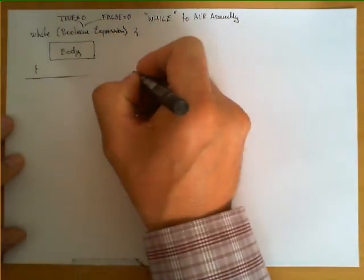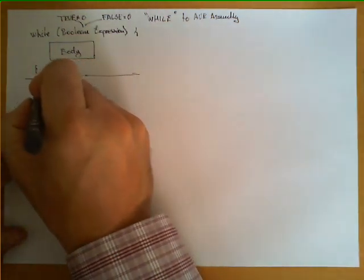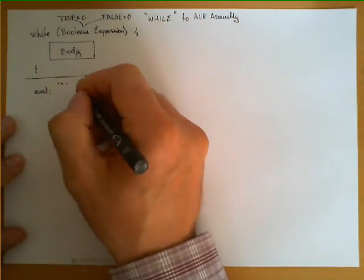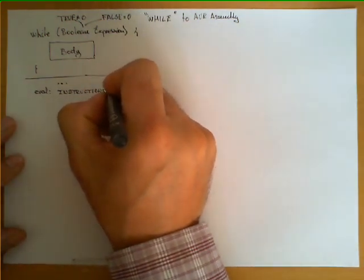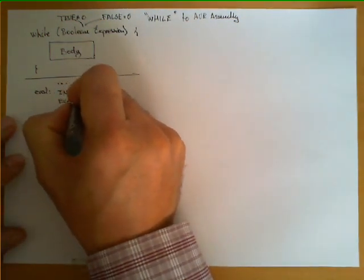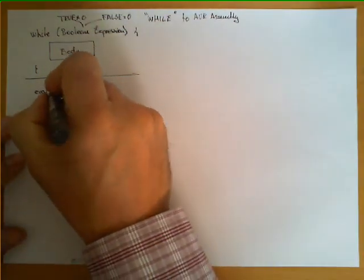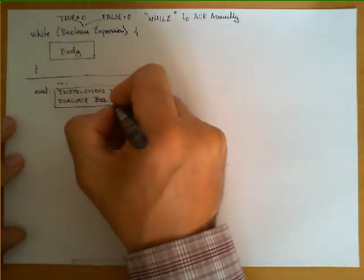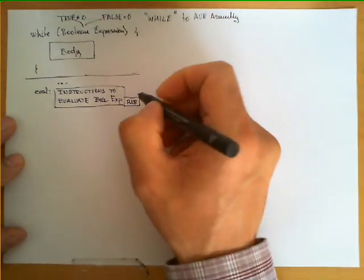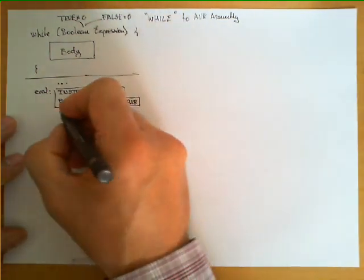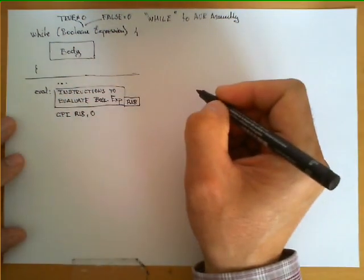In assembly code, this translates generically as follows. First, we assume we have some previous instructions. We define a first label which we call eval, and this eval points to the set of instructions — which could be arbitrarily complex — to evaluate the boolean expression. For the sake of this example, let's assume that the result of evaluating that expression has been stored in R18, register 18.